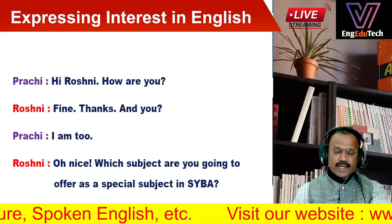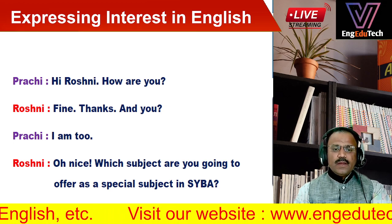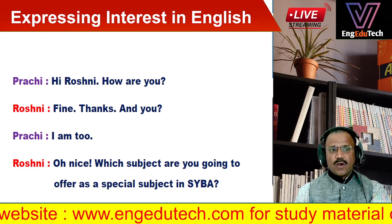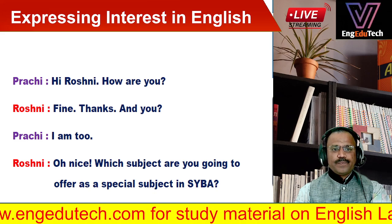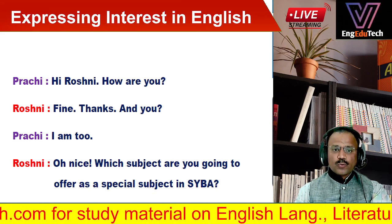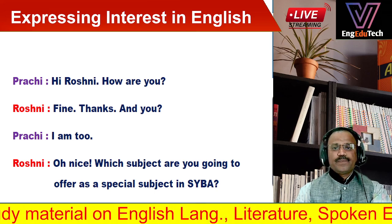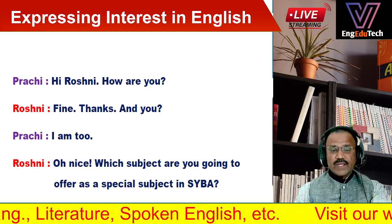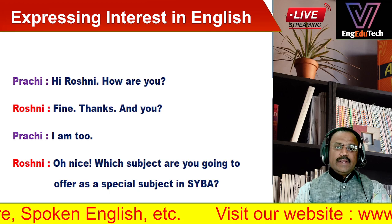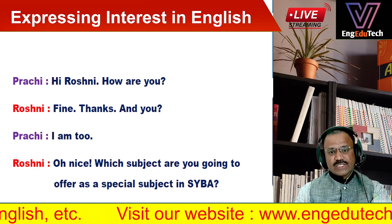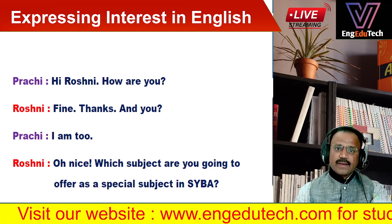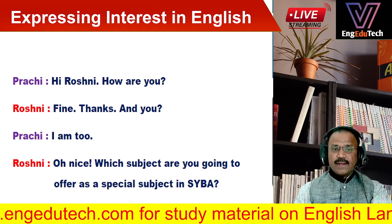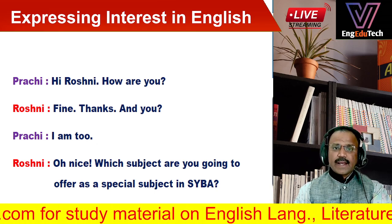Hello friends, welcome. In this video we are going to discuss an example of a dialogue between two friends. This is an example of how to express interest in English, how to express likes and dislikes in English. This is also an example of informal communication. The two characters, Prachi and Roshni, express their interest in an informal manner.